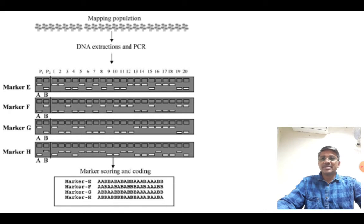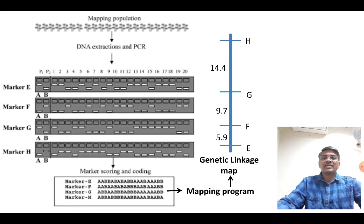This information is used for construction of a genetic linkage map for all the markers and phenotypic traits recorded in the segregating population.